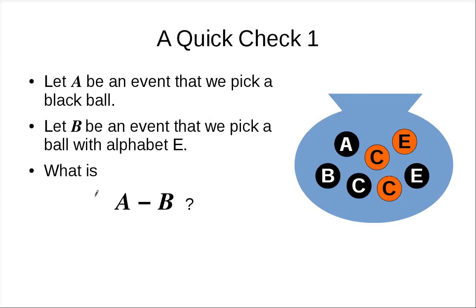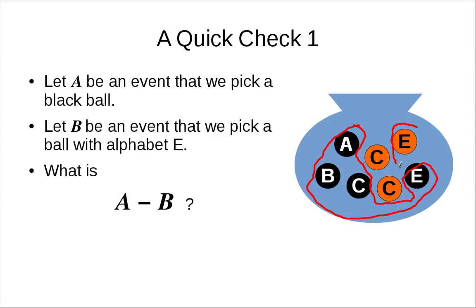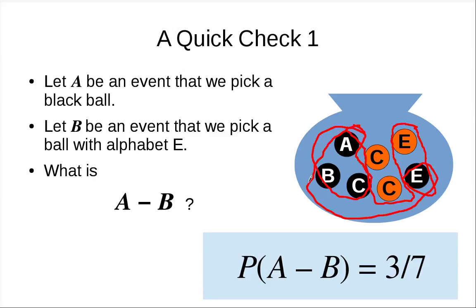Let A be the event that we pick a black ball, and let B be the event that we pick a ball with alphabet E. What is A minus B? Only three balls are left, so the probability of A minus B is three over seven.